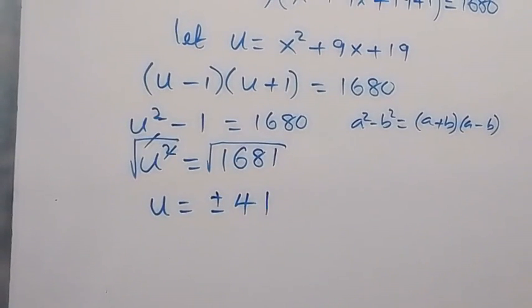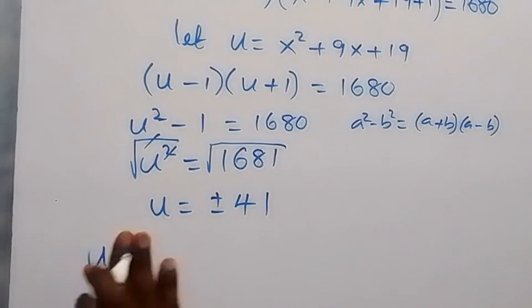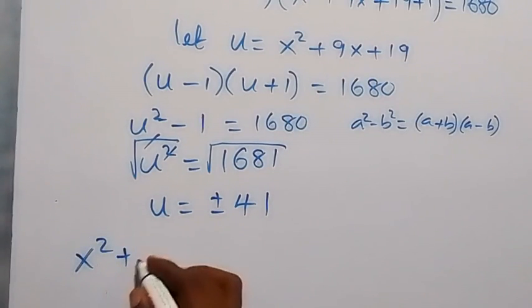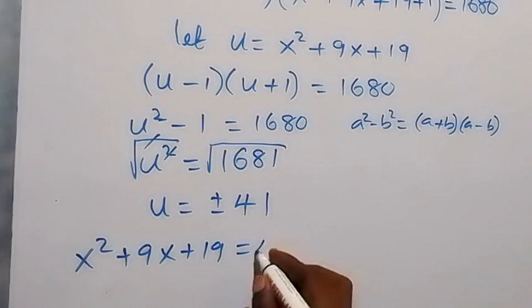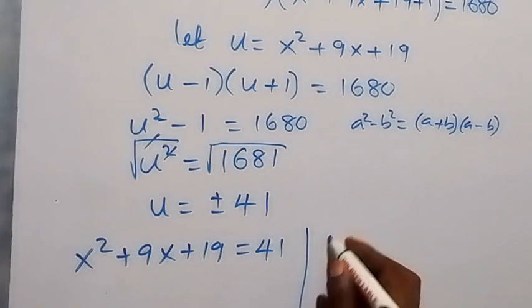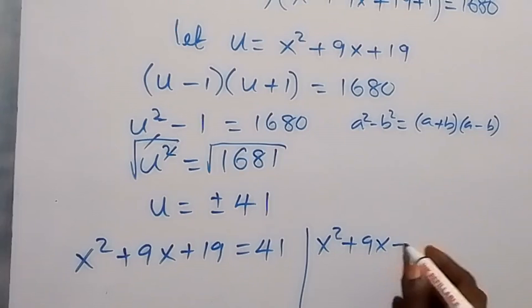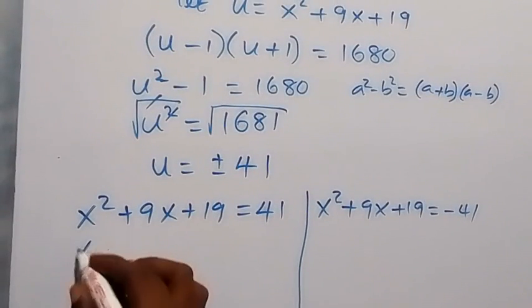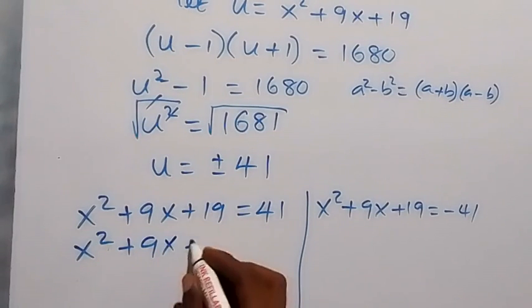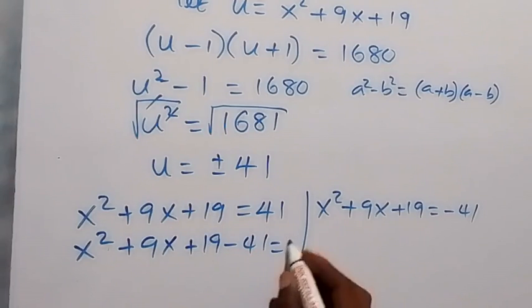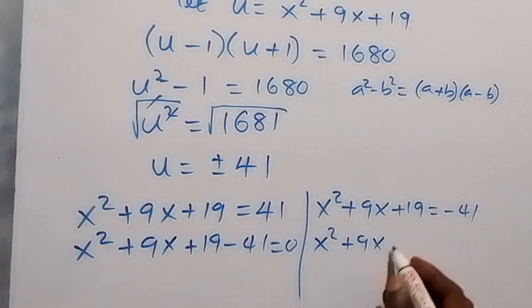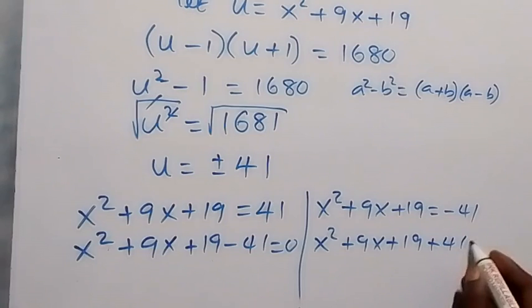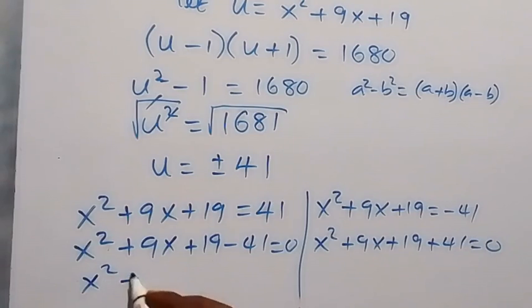Recalling that u = x² + 9x + 19, we have two cases. Case 1: x² + 9x + 19 = 41, which gives x² + 9x − 22 = 0. Case 2: x² + 9x + 19 = −41, which gives x² + 9x + 60 = 0.